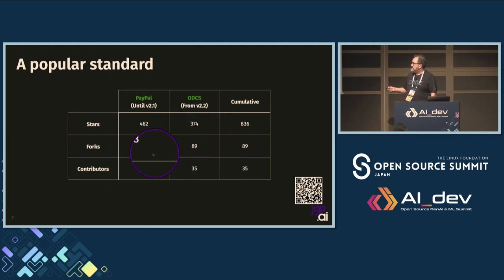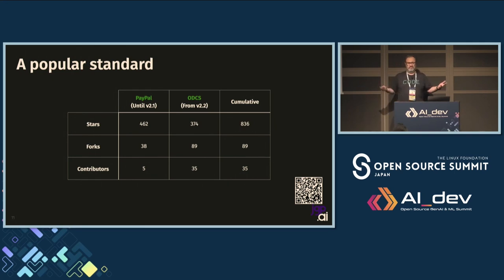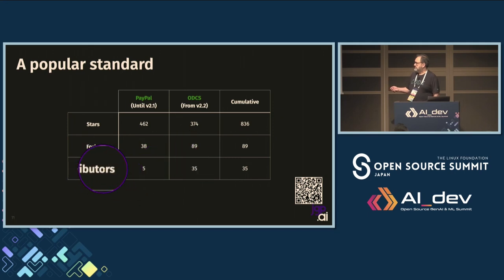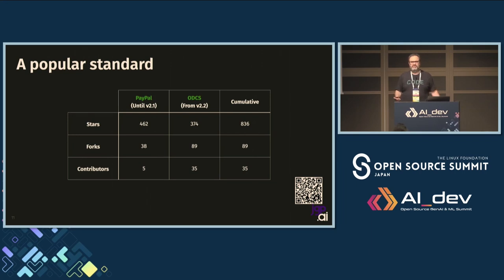What's interesting is the number of forks. For a standard, you don't want too many forks — otherwise, what's the point of having a standard? But it shows the popularity. What is really important is the number of contributors. We were five people at PayPal from the same company. Now we're 35, probably from at least 30 different companies.